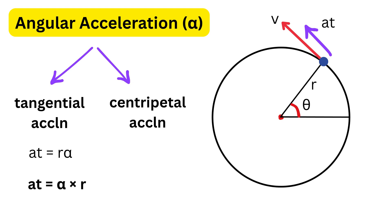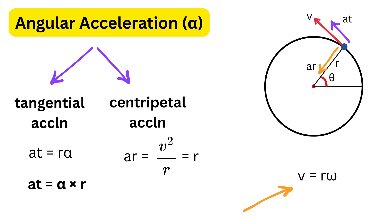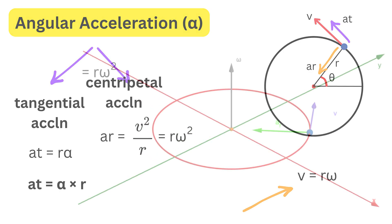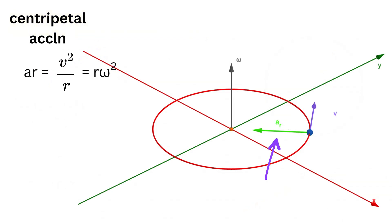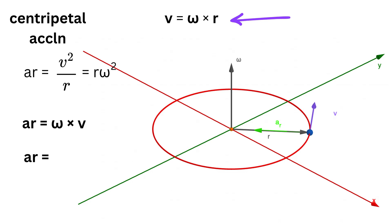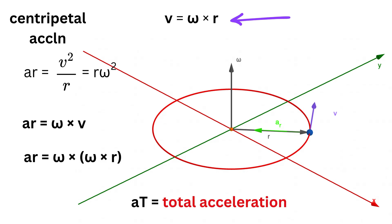Second, centripetal acceleration always points toward the center and keeps the object on a circular path by changing the direction of velocity. Centripetal acceleration equals v squared over r, or equivalently r times omega squared. In vector form, centripetal acceleration equals omega cross v. Since v equals omega cross r, centripetal acceleration equals omega cross (omega cross r). The total linear acceleration in circular motion is simply the vector sum of tangential and centripetal accelerations.